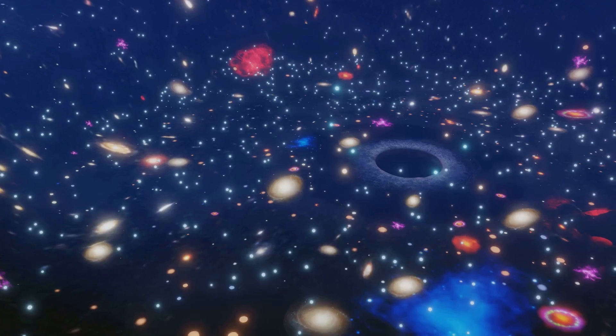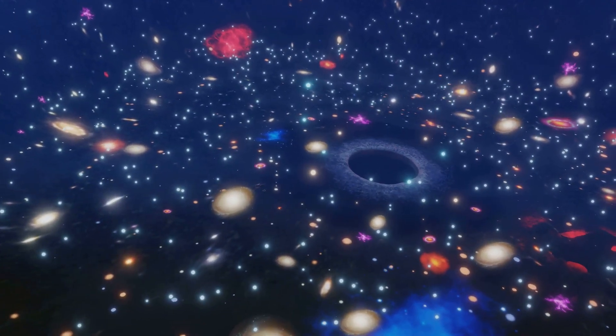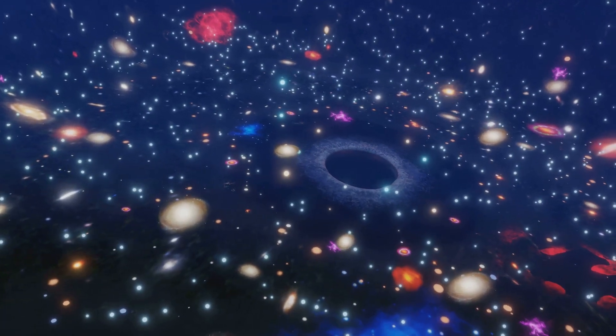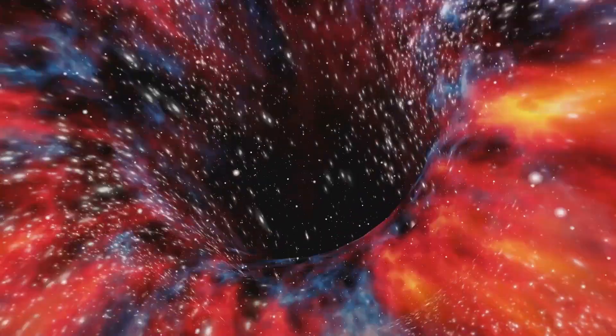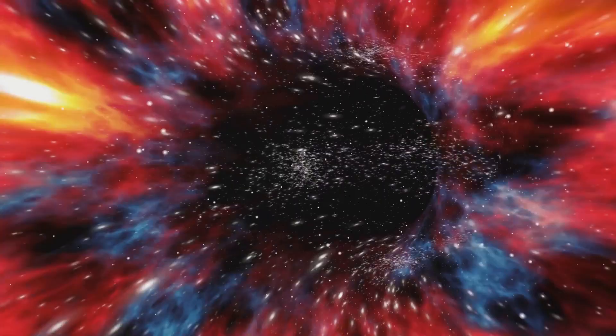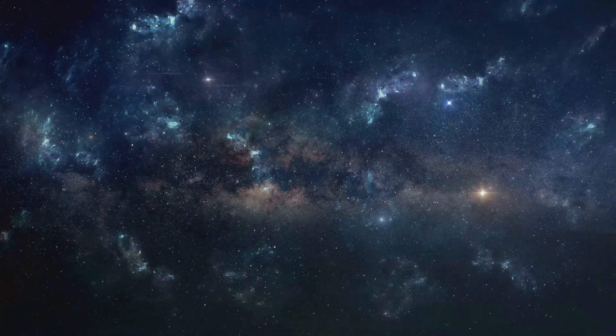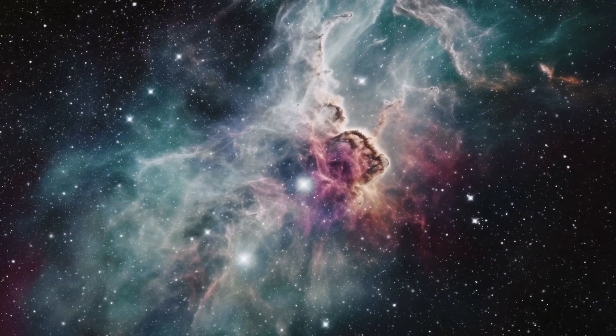Yet this doesn't stop scientists. Using indirect methods and sophisticated technology, they've been able to map the gravitational influence of the great attractor over millions of light years. This cosmic anomaly challenges our current understanding of the universe's large-scale structure. It raises questions about what lies in the zones of the cosmos that remain unexplored and unseen. As we continue our cosmic journey, probing deeper into the mysteries of the universe, we're reminded of how much we still have to learn. The great attractor remains one of the greatest mysteries of our universe.